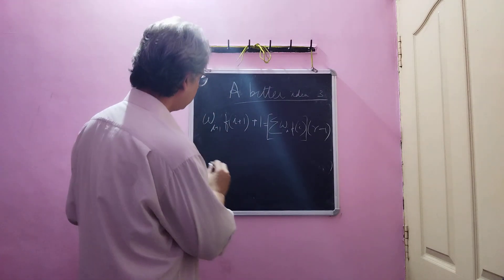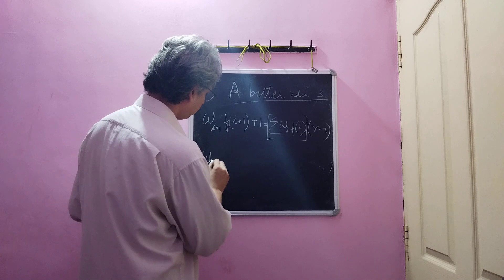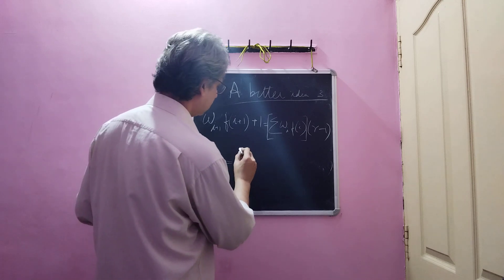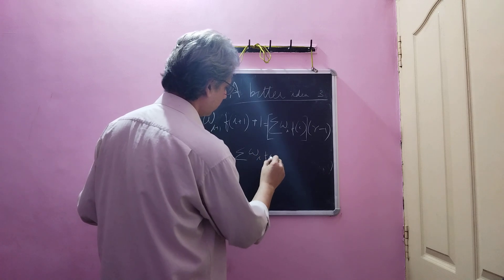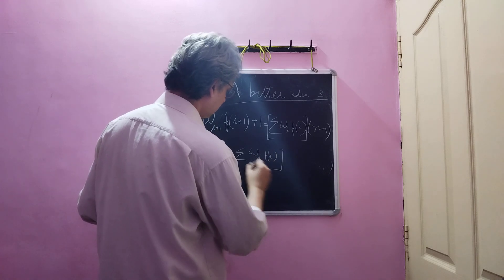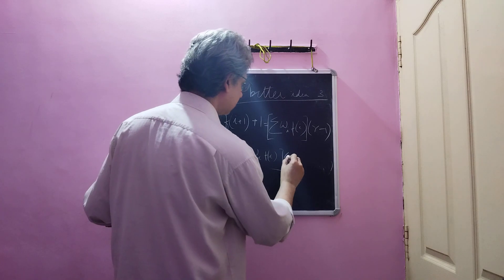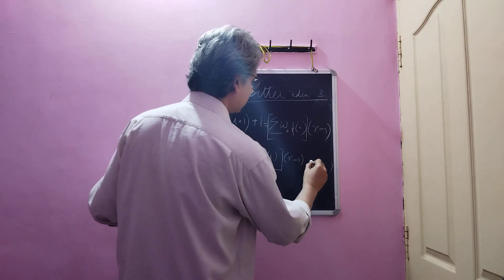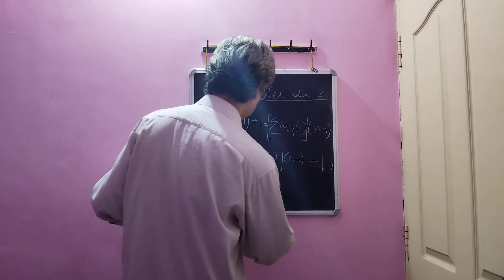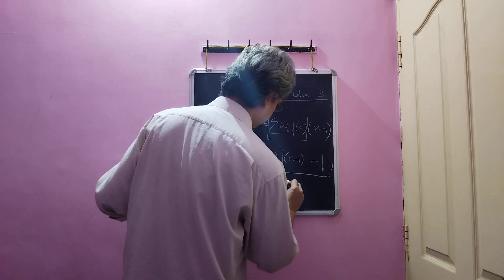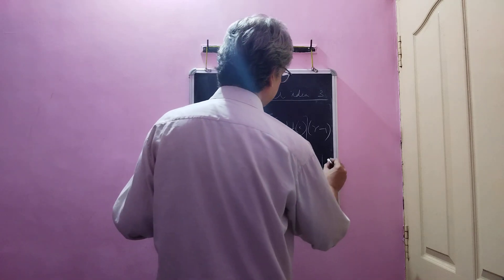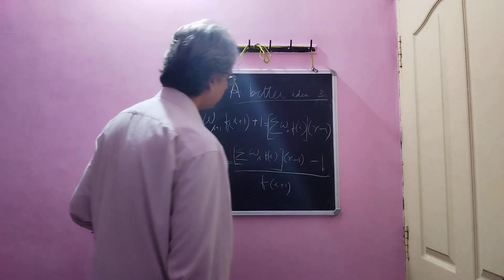So that gives you w i plus 1 is equal to summation w i times f of i whole times r minus 1 minus 1 is equal to i plus 1. This is the only requirement we need in order to.